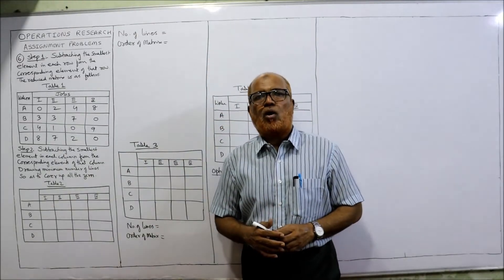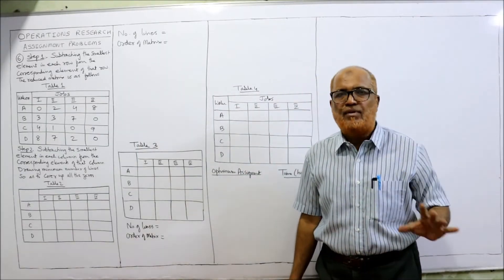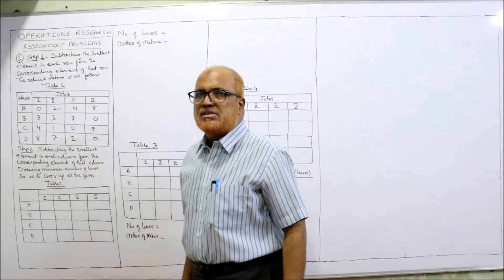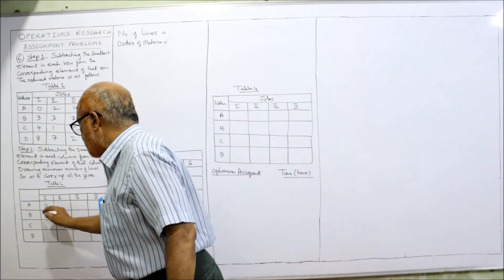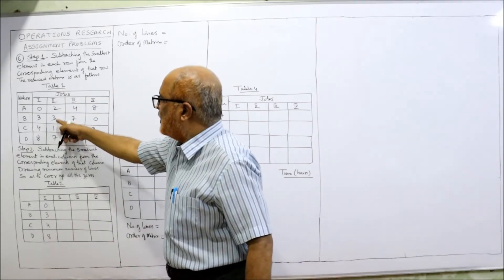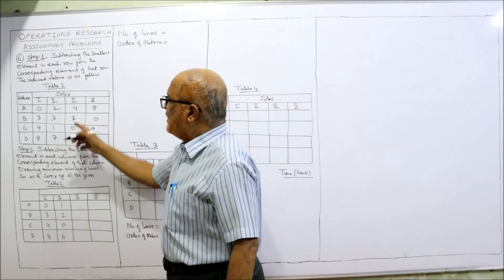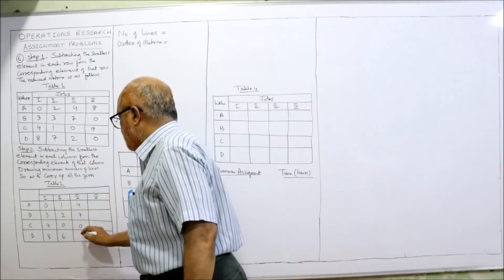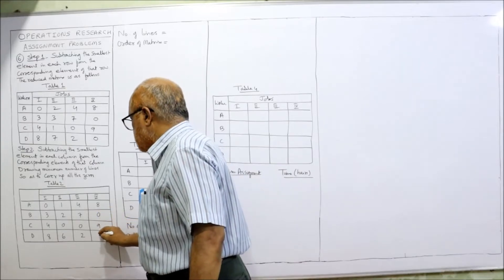The second step is column subtraction — in each column the smallest element is subtracted from every element of that column. First column minimum is 0, so same values: 0, 3, 4, 8. Second column minimum is 1: 2−1=1, 3−1=2, 1−1=0, 7−1=6. Third column minimum is 0, so same values: 4, 7, 0, 2. Last column minimum is 0, so same values: 8, 0, 9, 0. The second step is done.